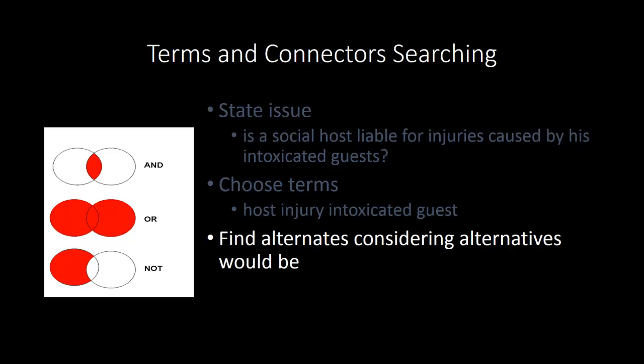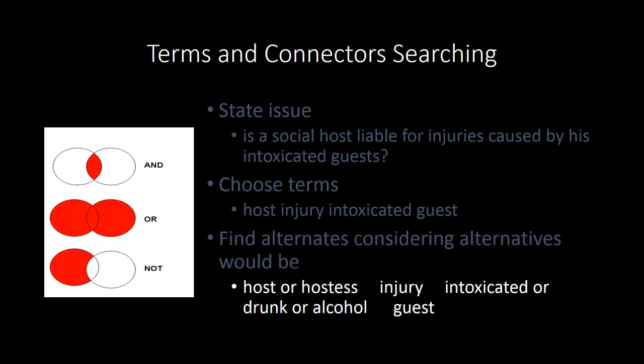The third step is to expand your search to account for all possible synonyms or alternatives for your key terms. One of the functions of using indexes and secondary sources is that they lead you to alternative terms like undue influence or bribery. This is especially important in subject areas you are not familiar with. For example, a host could just as easily be a hostess, and a guest could be intoxicated, or drunk, or under the influence of alcohol. So one way to look at the search is to account for all these alternatives.